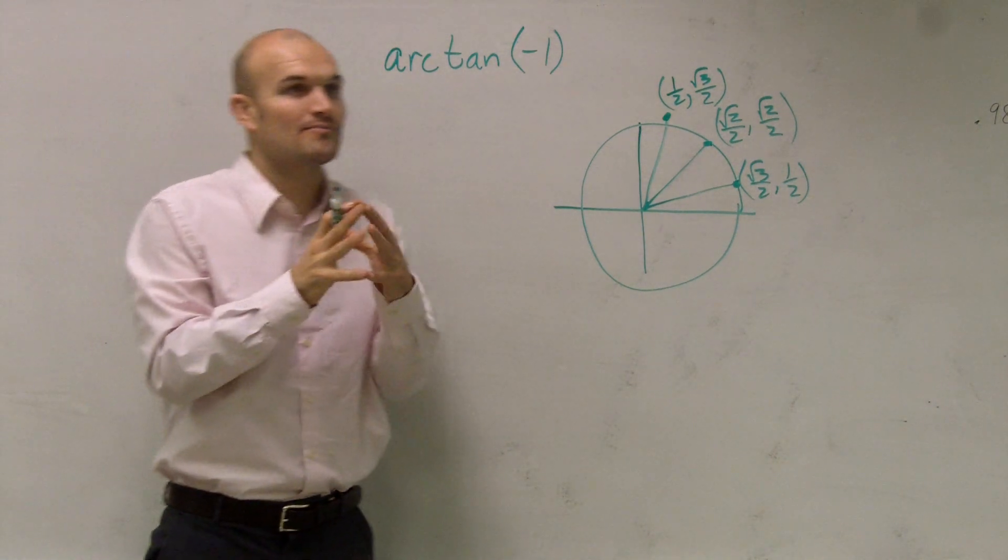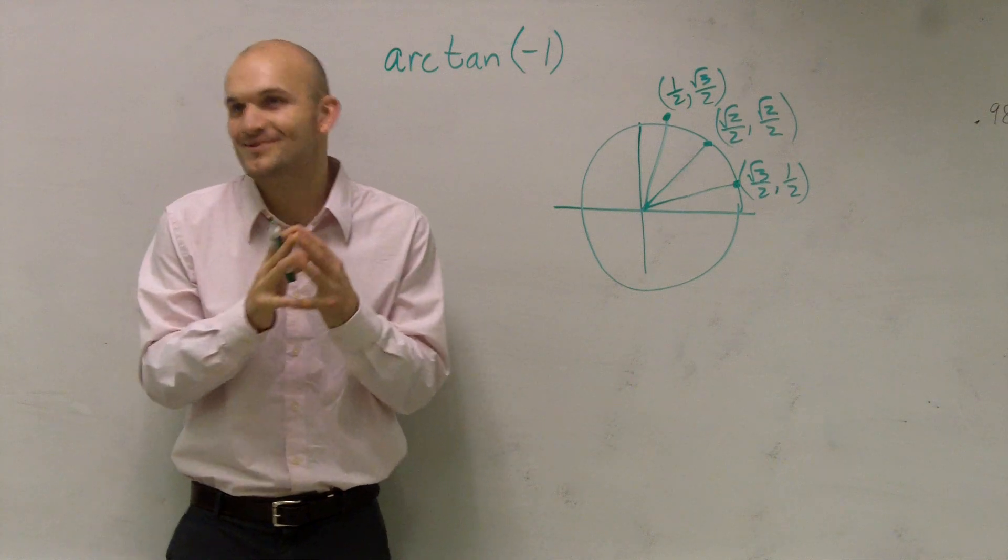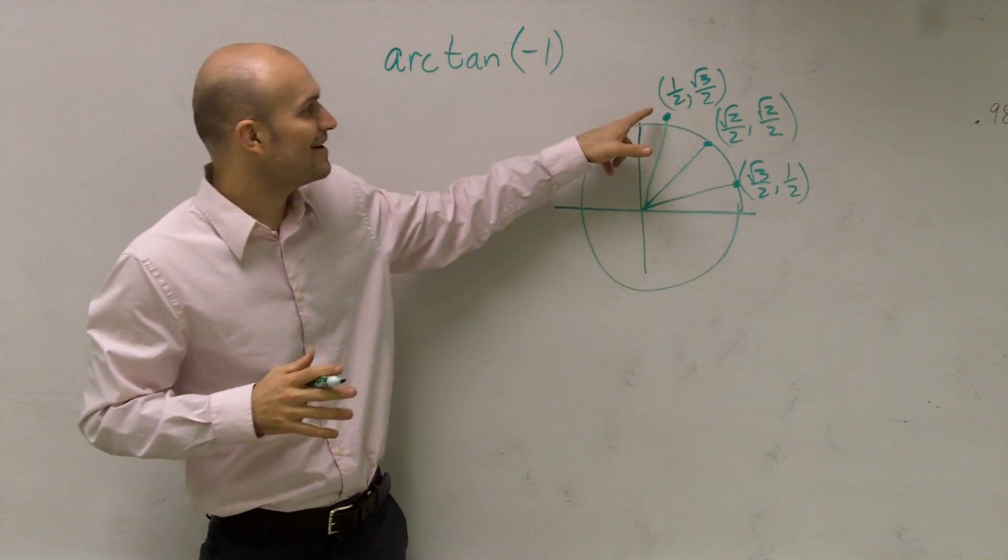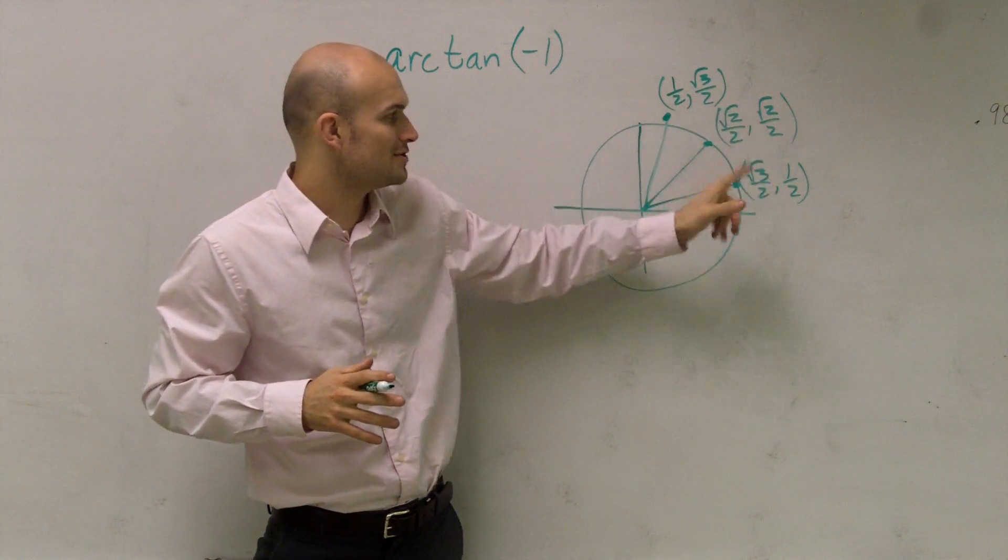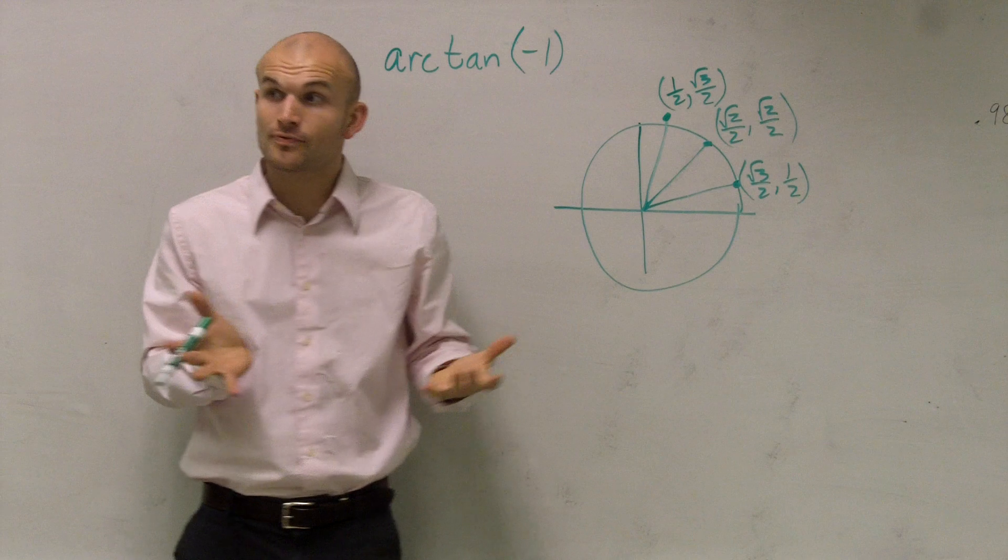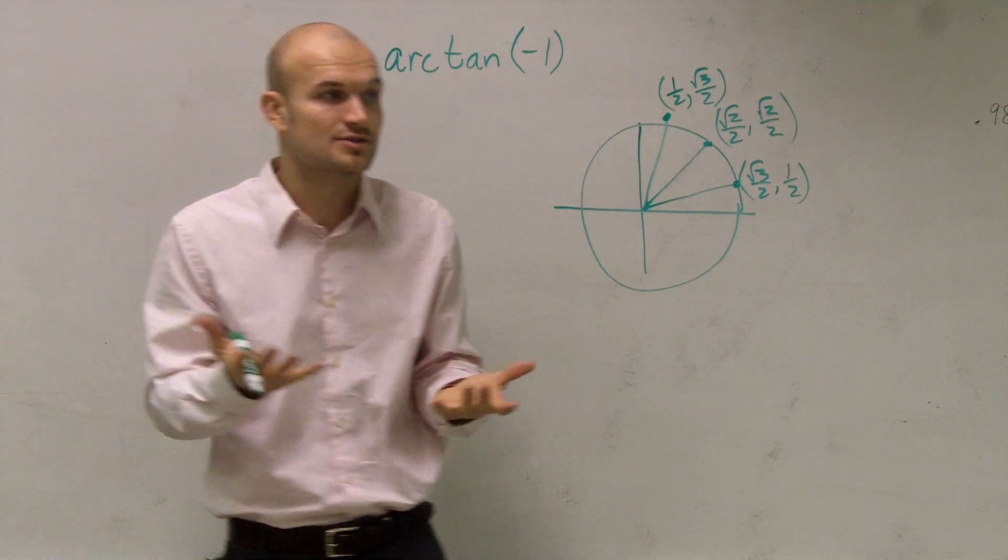So ladies and gentlemen, I just want to remind you of our unit circle, right? So we have three points. We have 1 half, radical 3 over 2, radical 2 over 2, radical 2 over 2, and radical 3 over 2 comma 1 half. Those are our three points that are our main ones on our unit circle.